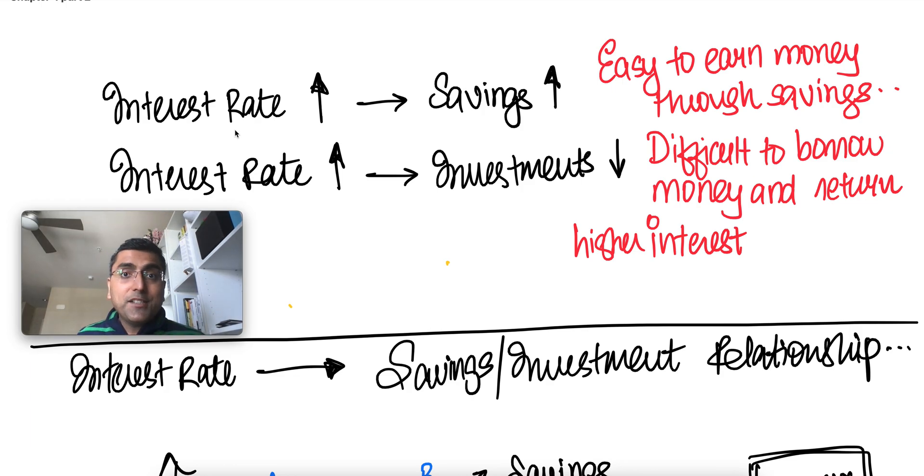Because for people, it's easy to earn money by just keeping them in the bank account. If you can keep your money in the bank account and make more money because it's higher interest rate, you're going to do that versus investing in physical goods and companies. You will just put it in a bond that gives you a higher interest rate.